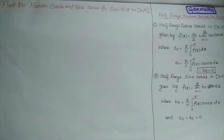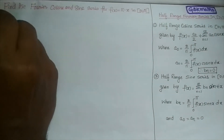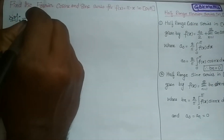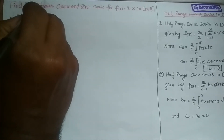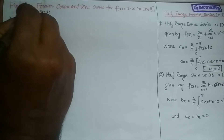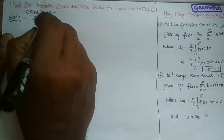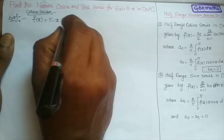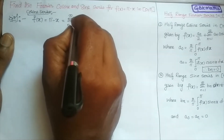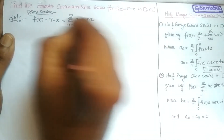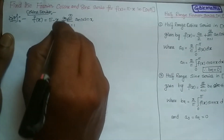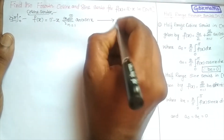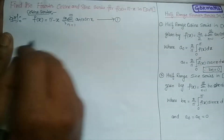So let us go with first Fourier cosine series for the given function. Let f(x) = π - x. Recalling this formula, f(x) = π - x = a₀/2 + summation n=1 to infinity aₙ cos(nx). This is equation number 1. The unknown values are a₀ and aₙ. Directly I am going to a₀.